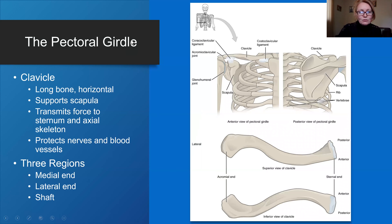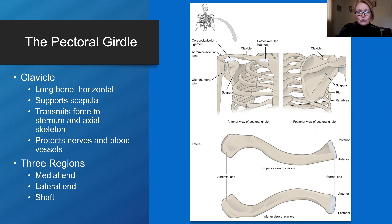The pectoral girdle consists of the clavicle and scapula. The clavicle is the only long bone in your body that lies horizontally instead of vertically. It supports the scapula, transmits force to the sternum and axial skeleton, and protects nerves and blood vessels. You can distinguish three regions on the clavicle: the medial end, which attaches to the sternum; the lateral end, which attaches to the scapula; and the shaft or body of the clavicle.